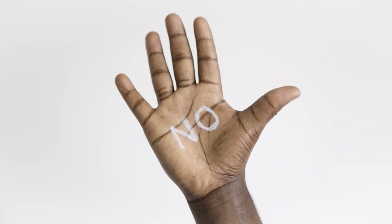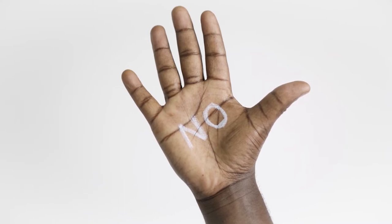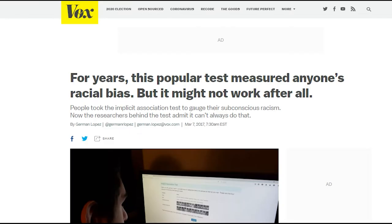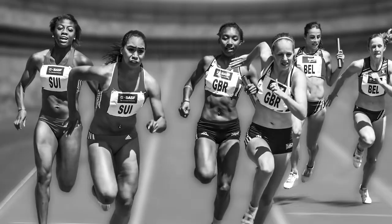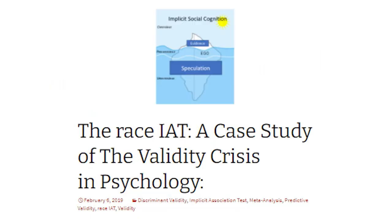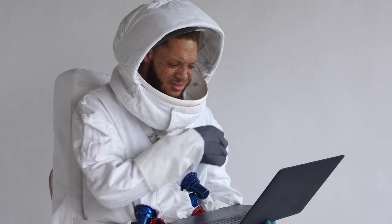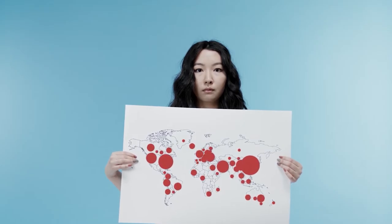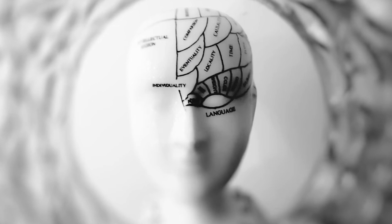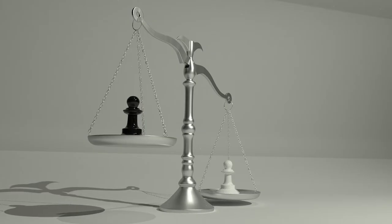There is no evidence that a reaction speed difference can be translated into how we ordinarily think of bias, and there is certainly no evidence that this translates to prejudice. In fact, Greenwald, a co-creator of the Implicit Association Test, explicitly stated that he does not regard the IAT as testing for racism or prejudice. Further, whether the IAT is capable of predicting real-world behavior is a hotly contentious debate. Several meta-analyses have shown that the IAT has very weak predictive power and has not yet demonstrated that the behaviors it can predict have meaningful real-world effects.